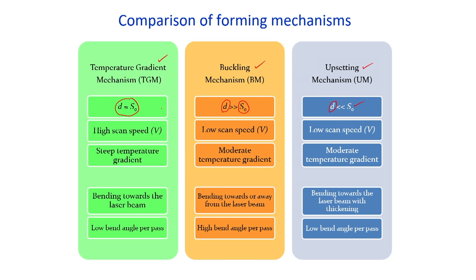To get a steep temperature gradient in TGM, we use a high scan speed — the laser must traverse rapidly. In the buckling mechanism, to achieve uniform temperature at the top and bottom surfaces, the scan speed should be low so there is sufficient interaction time between the laser and the work part. In the upsetting mechanism as well, the scan speed must be low because we want bulging or thickening of the laser-irradiated area, and only then can we achieve reduction in the width of the work part.